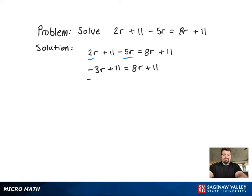So we're going to start just by adding 3r to both sides to get rid of the r's on the left side of the equation.